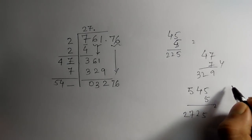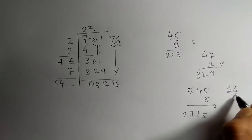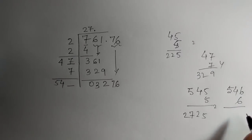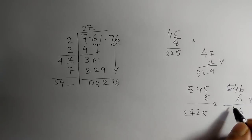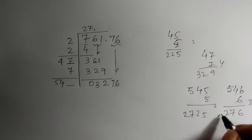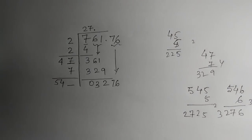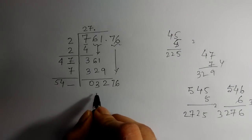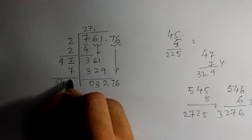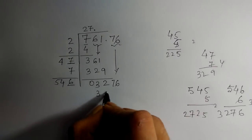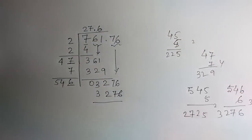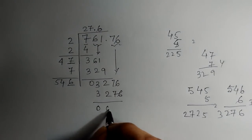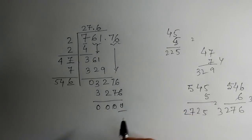So let us take 546 times 6. It is 3276, it is coming exactly. So 546 times 6 is 3276. Subtract, the result is 0. Remainder is 0.